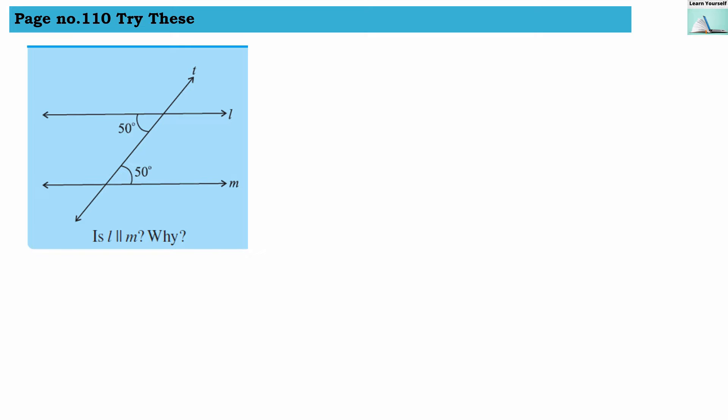Welcome to Learn Yourself, page number 110, Try These. In this problem, they have given us two parallel lines, line l and line m, with t as our transversal. They have shown us two angles here with the same measures, and they're asking: Is line l parallel to m? Why? These two angles have the same measure because they are alternate angles, and alternate angles are equal. So if l is parallel to m, then these alternate angles are equal in measure.